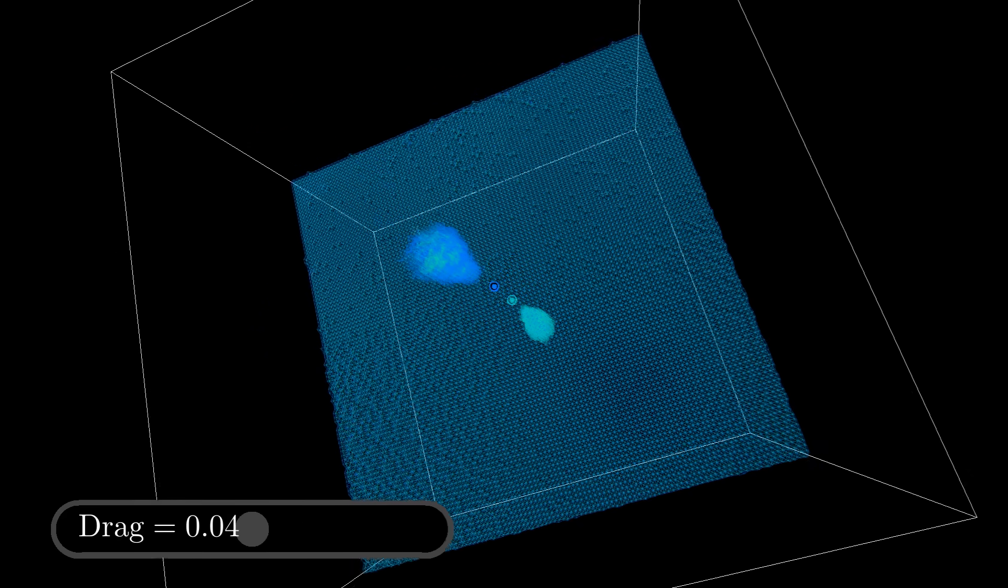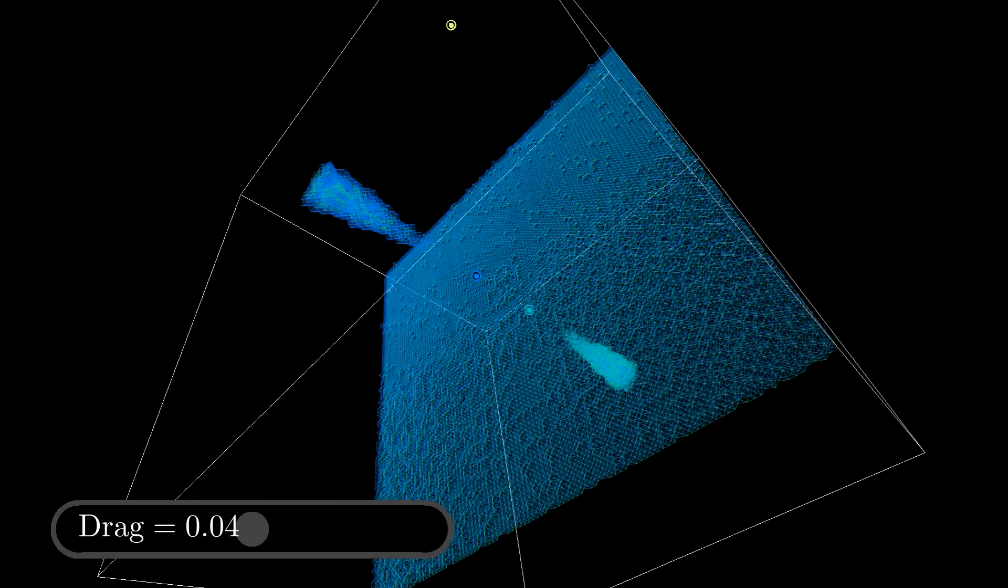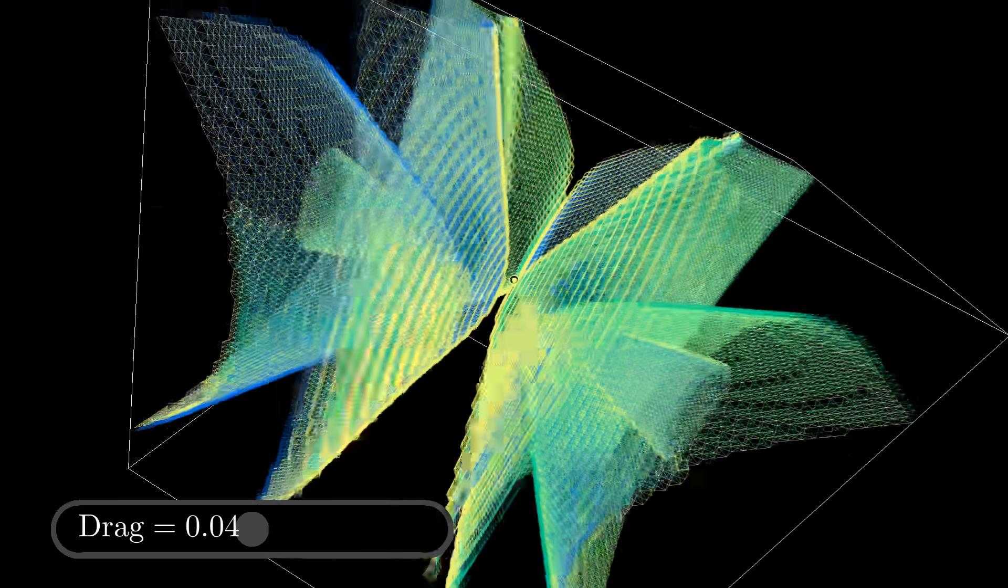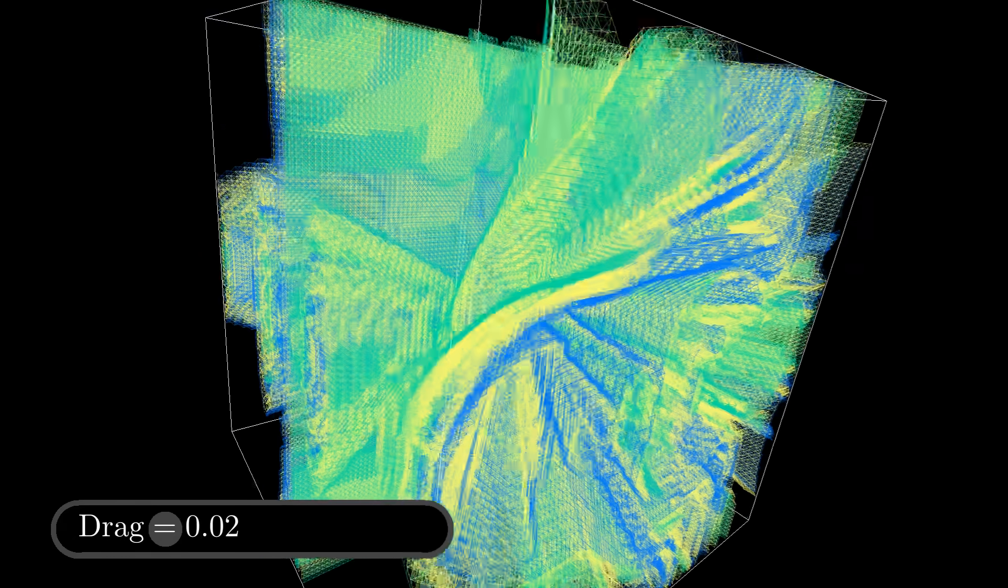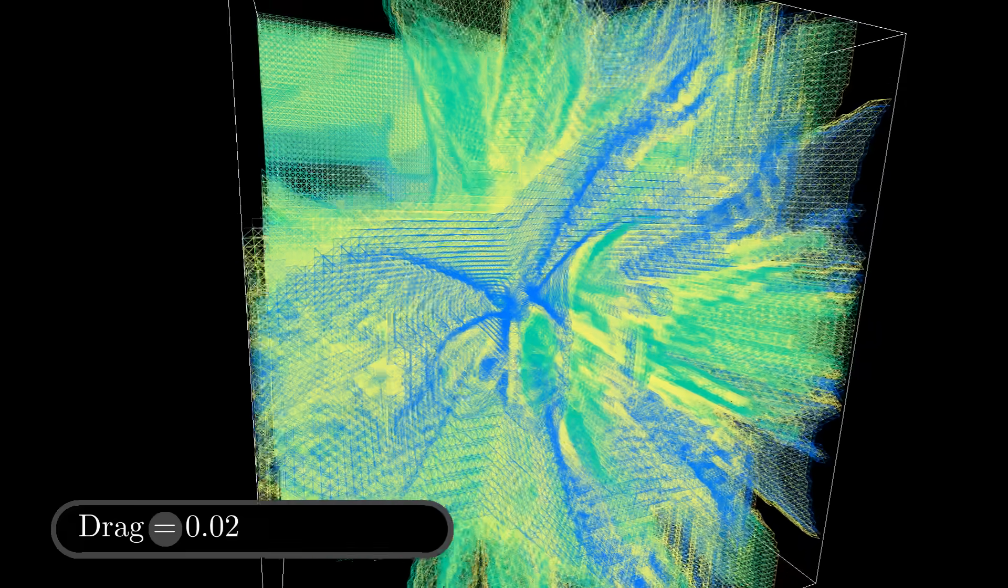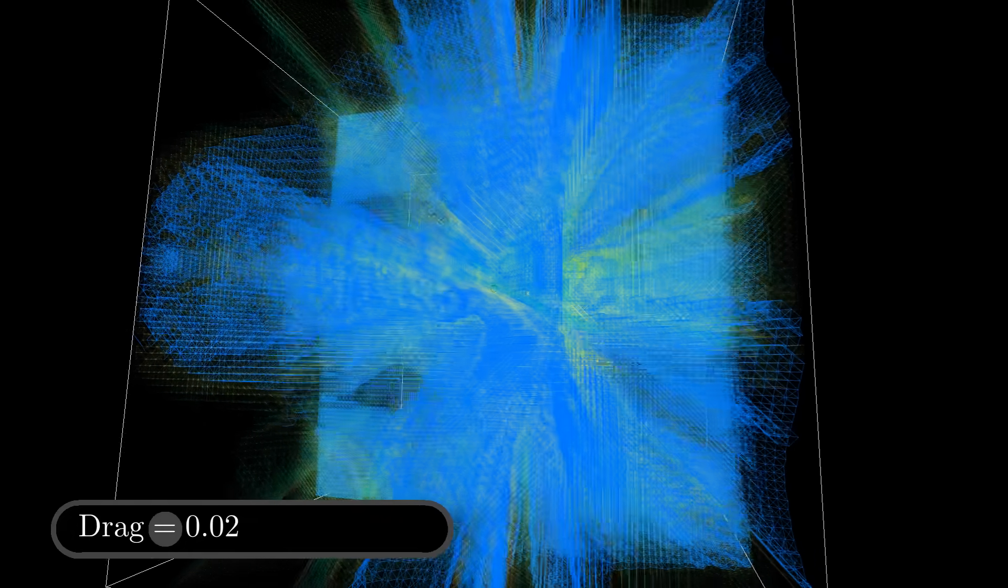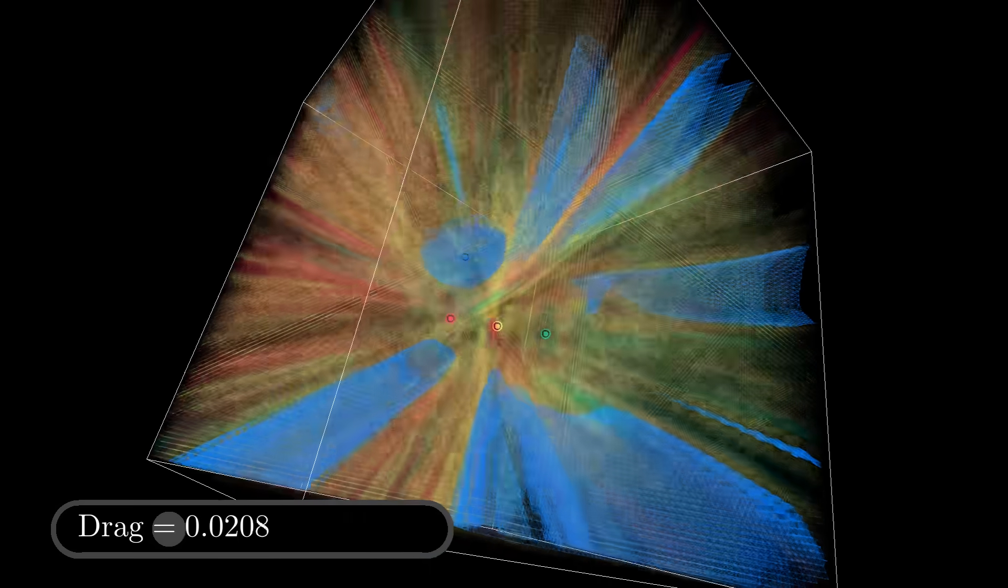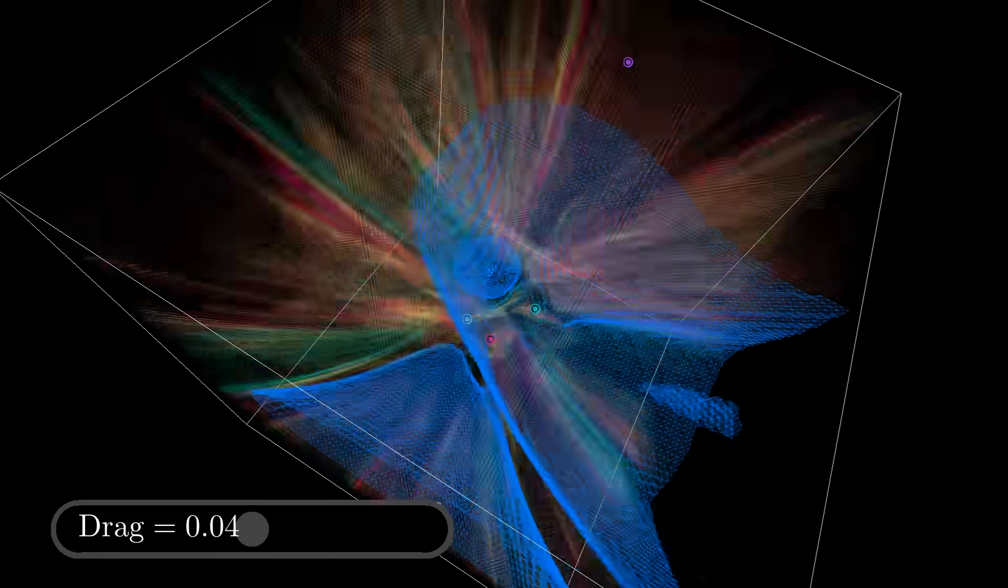With three planets, you get this nice mirror plane symmetry about the plane all three points lie on. Here's five planets. And here's eight.